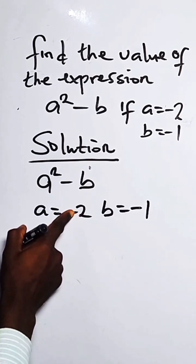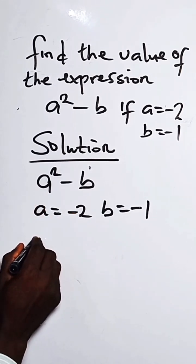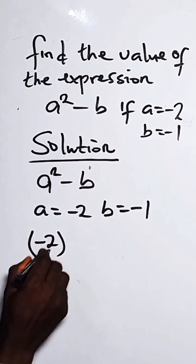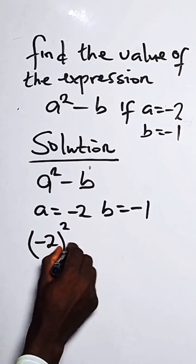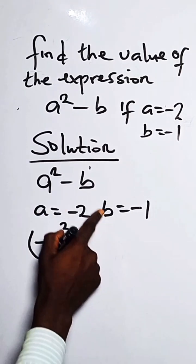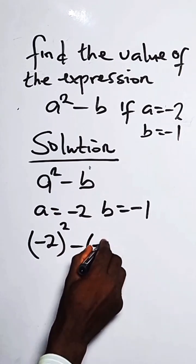We substitute the value of a to be minus 2 in the expression, which is minus 2 squared minus. The value of b, we substitute it back as minus 1.